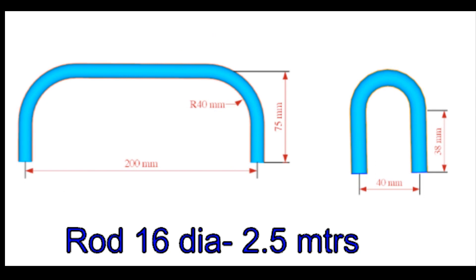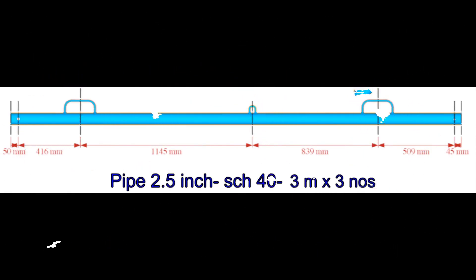16 mm diameter rod for 6 numbers handles and 3 numbers hooks. The lugs of the tripod are made from 2 1/2-inch, 40-schedule pipe. The length of each leg is 3 meters each.